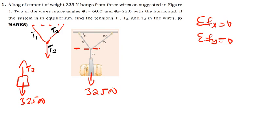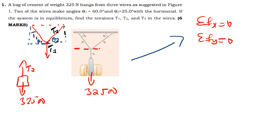These angles form a Z-shape, meaning the angle here is the same as the angle at the junction — so this angle is theta 2 and this one is theta 1. T1 is a vector going in that direction. We can resolve it into components: T2x, T2y, T1x, and T1y.